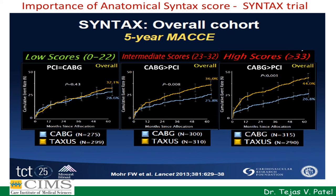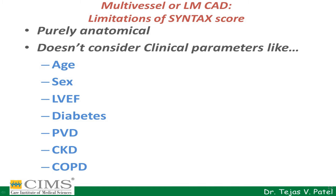The SYNTAX score is an anatomical scoring system based on the coronary angiogram which quantifies lesion complexity and predicts clinical outcomes after PCI or bypass surgery in patients with multivessel coronary artery disease or left main coronary artery disease. The landmark SYNTAX trial showed that if the score is low — less than 22 — bypass surgery and angioplasty have almost equal long-term outcomes. But if the score is high, greater than 23, then bypass surgery is far superior to angioplasty in terms of long-term cardiovascular outcomes and patient safety.